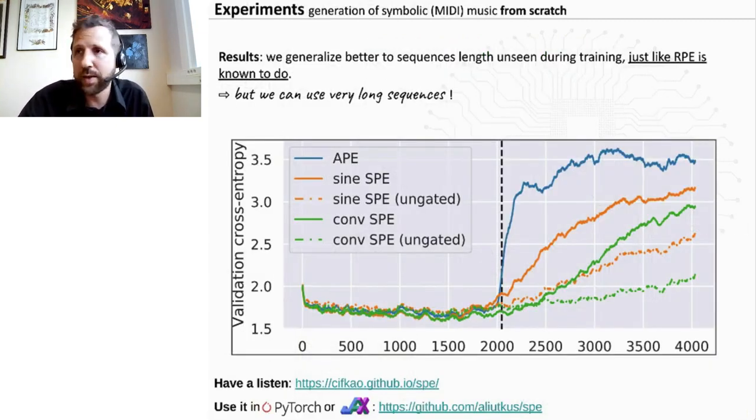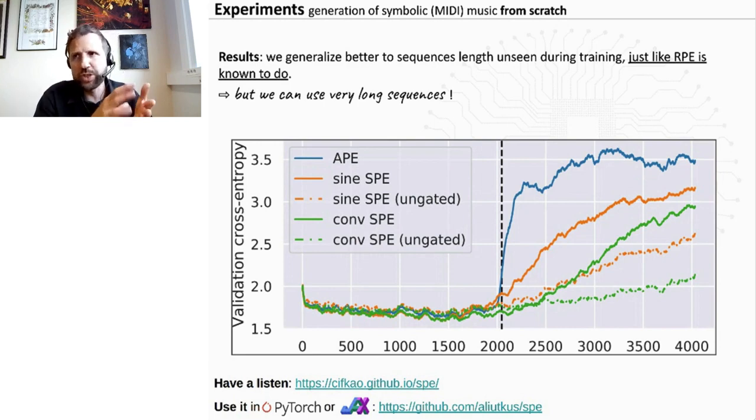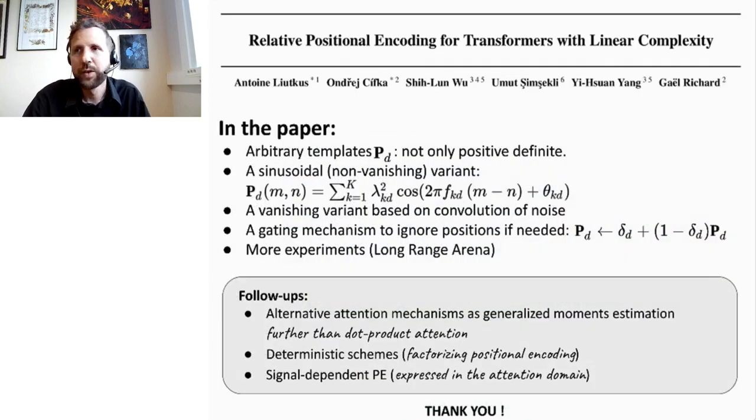So we did many experiments. You can try it. The code is available on PyTorch and Jax. For instance we did experiments for generating symbolic MIDI from scratch and we generate music after training. And the interesting part is when we get to the training sequence length which is 2000 here, the classical positional encoding which is in blue here starts to degrade rapidly. This is a known problem, is that when you get to sequence lengths that are not seen during training it starts to degrade, whereas relative positional encoding or the other curves here behaves better. So this was expected because it's a feature of relative positional encoding, but this was not available for very long sequences before.